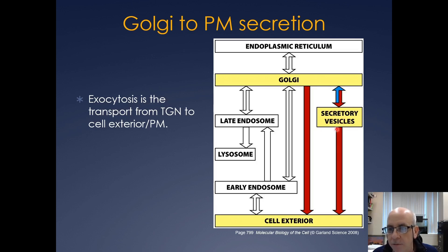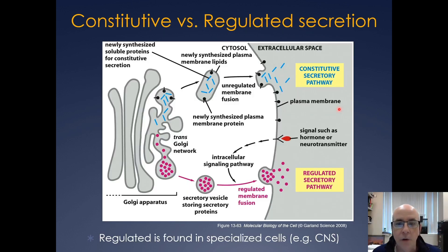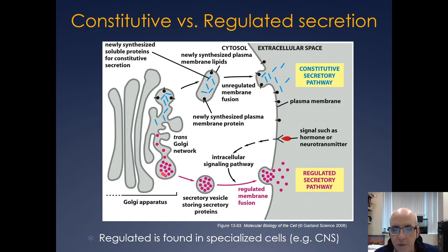The best way to think of secretory vesicles is to think of vesicles containing neurotransmitter in nerve cells. You can have a constitutive secretory pathway where proteins bud off from the trans-Golgi network in a vesicle and then fuse with the plasma membrane releasing their cargo or plasma membrane receptors. In the case with secretory vesicles, they also bud off the trans-Golgi network, but there's an enrichment step with concentrated secretory cargo, and they can just sit docked at the plasma membrane until they get some sort of signal like a hormone or neurotransmitter to cause the vesicles to fuse.